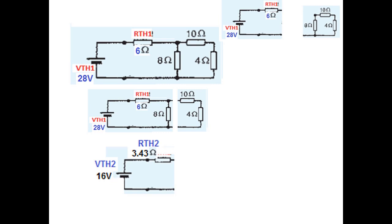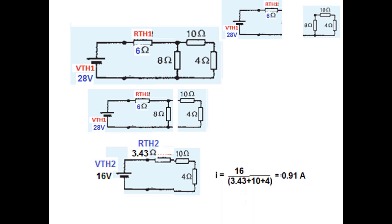When we short the voltage source, the 6 ohm and 8 ohm resistances come in parallel, giving R_Thevenin 2 = 3.43 ohms. We then reconnect the two parts and use Ohm's law to find the current through the 4 ohm resistance. Total voltage divided by total resistance gives a current of 0.9 amperes. This completes the divide and conquer technique. While it may look difficult at first, once you start solving problems, it is actually much easier than any previous technique.